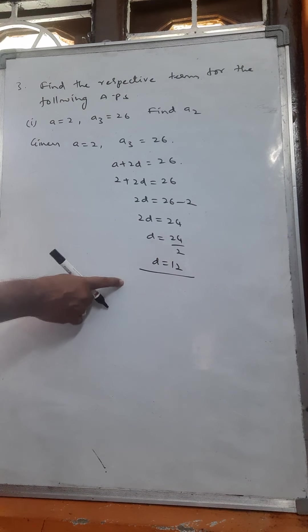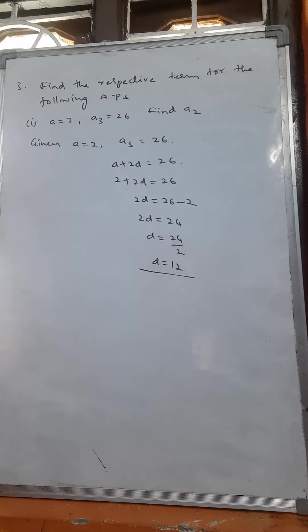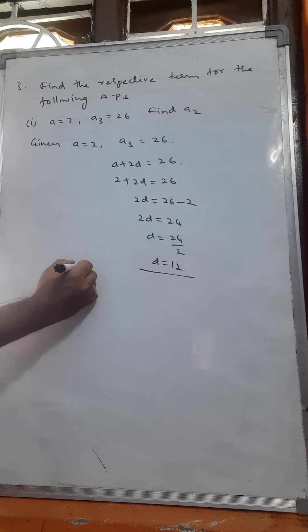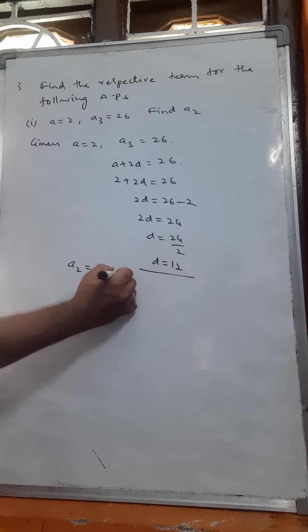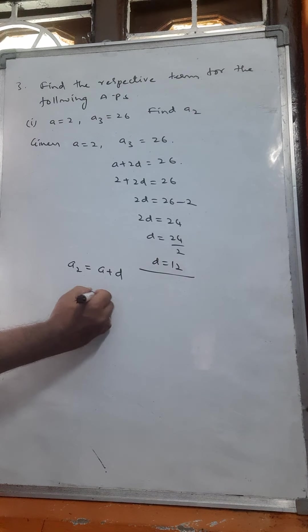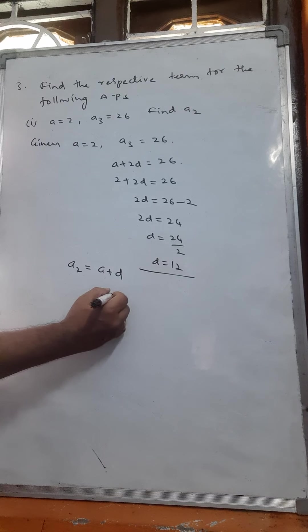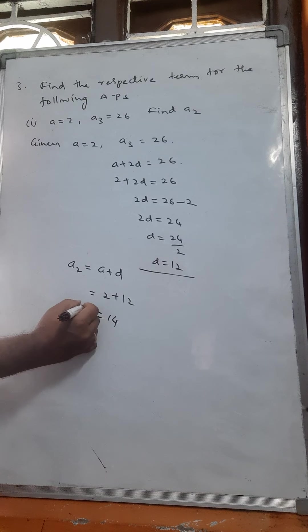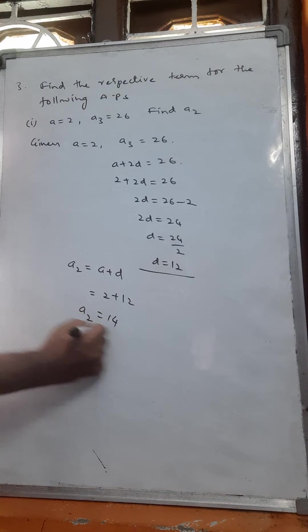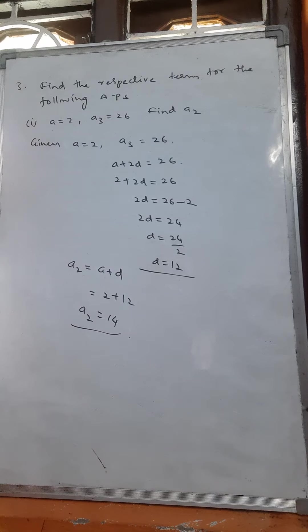We got the d value. Now we have to find a2. a2 means second term, that is a plus d. a means 2 plus 12, that is equal to 14. So a2 is equal to 14.